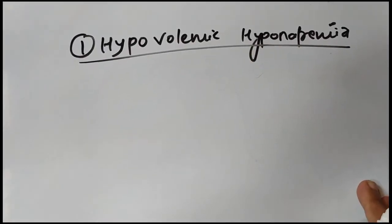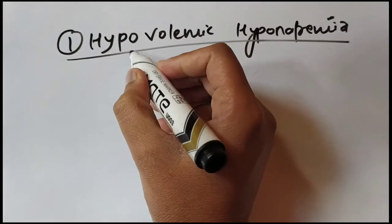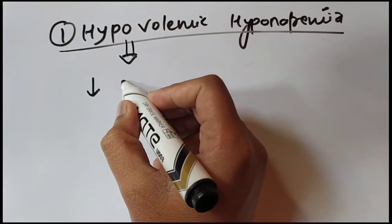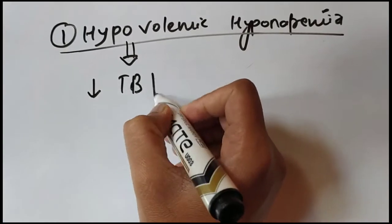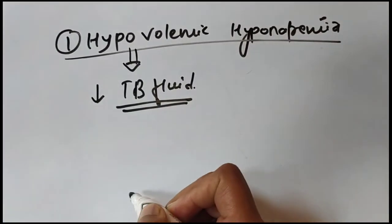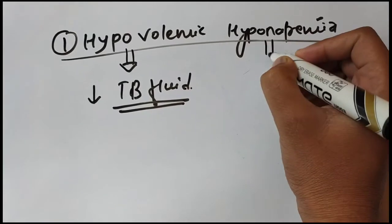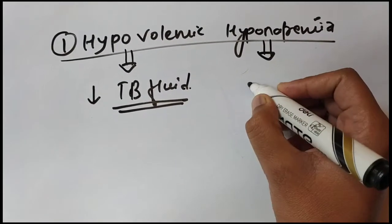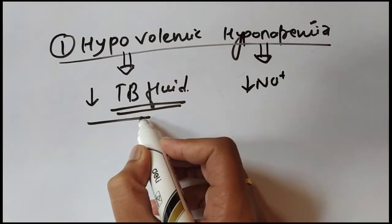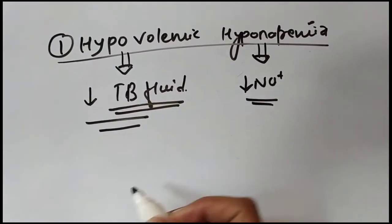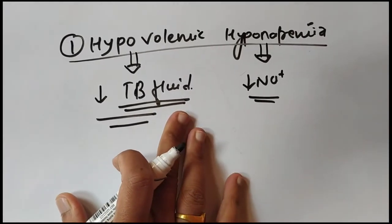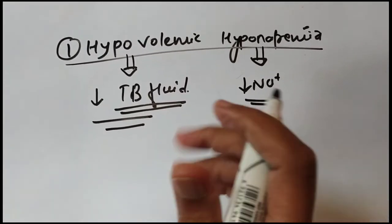In hypovolemic hyponatremia, as the name suggests, there is a decrease in the total body fluid as well as a decrease in the sodium levels. So what are the conditions where there is both a decrease in body fluid and a decrease in sodium levels? Let's talk about those causes.